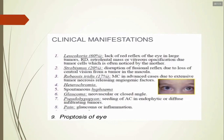Strabismus is the misalignment of the visual axis — the eye deviates to one side. It results from disruption of the fusional reflex due to loss of central vision from a tumor in the macula. If there is a tumor in the macula, the child will turn the eye to seek vision. All strabismus cases should be dilated and assessed with dilated fundoscopy to evaluate for endophytic or exophytic retinoblastoma, as the diagnosis can be missed at the early stage.